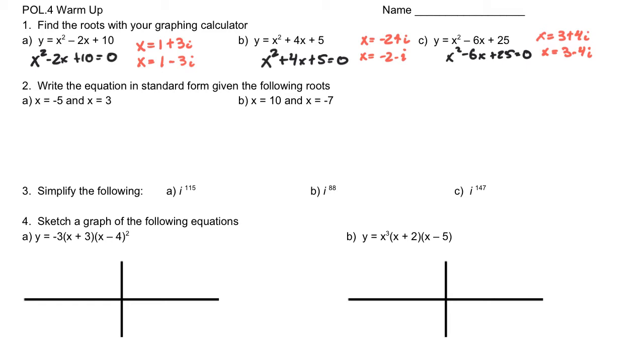Now, moving on, if we have the standard, writing the standard form if we're given the roots, what we want to use is our factors. So as we take a look at what our factors are for each of these, if these are our roots, then we know that we're going to have x plus 5 and x minus 3. You do the opposite of those roots that you have in order to write out what that factor is. That's important.